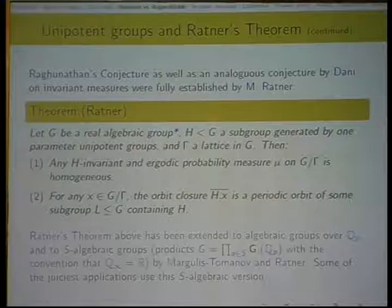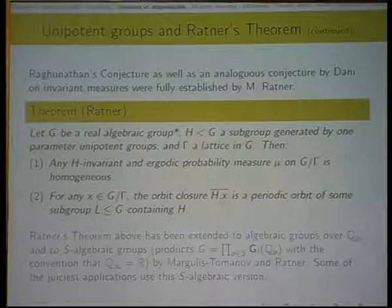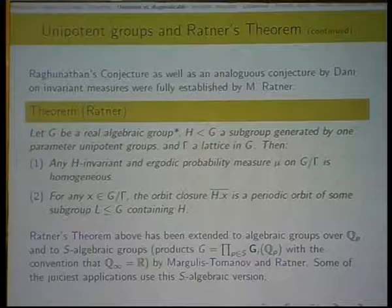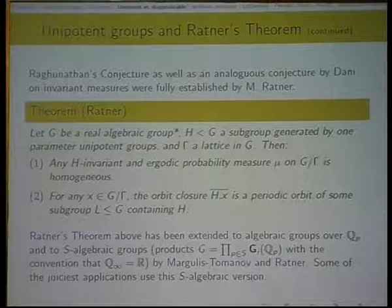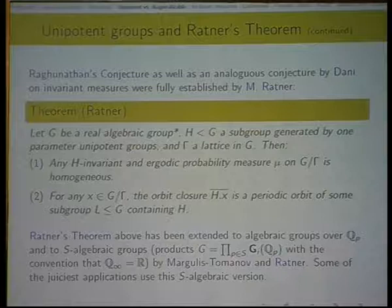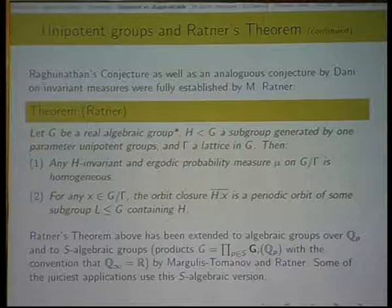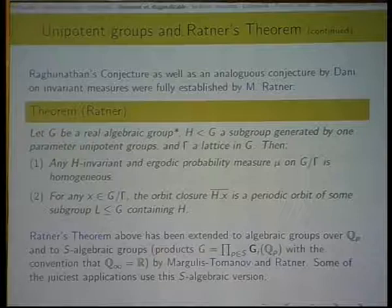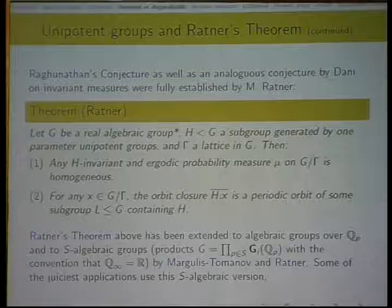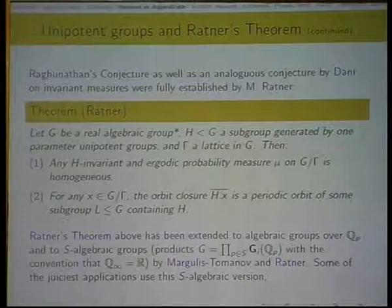And of course, once you have such a powerful theorem, you could deduce information about particular points that you might care about. This theorem has been extended to algebraic groups over p-adic fields and to S-algebraic groups, products of possibly different algebraic groups over different fields, by Margulis, Tomanov, and Ratner independently and at the same time. And this is not just a generalization for the sense of generalization. Actually, some of the juiciest, nicest application of Ratner's theorem of this unipotent rigidity of unipotent flows use this S-algebraic version.